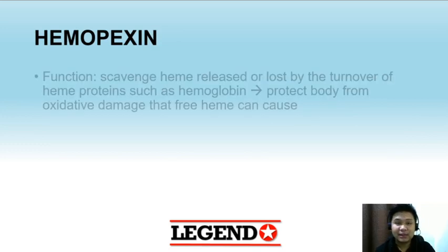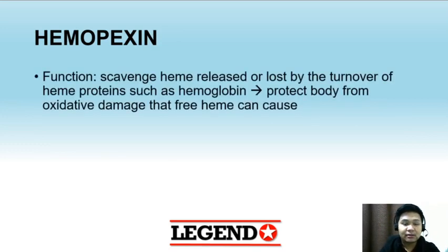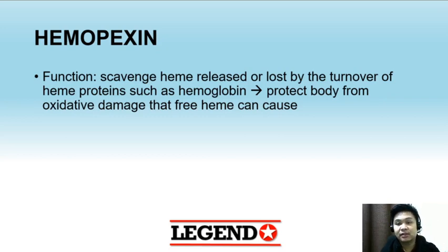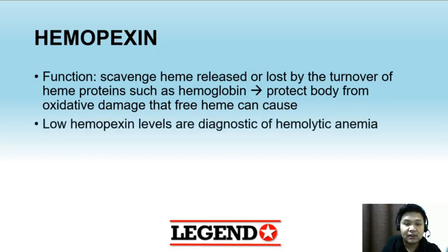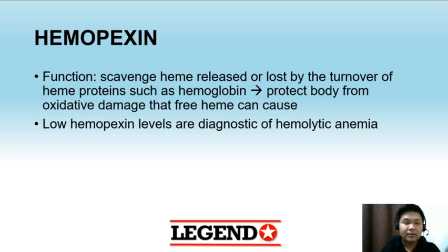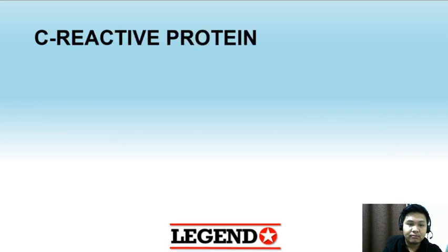Another protein is hemopexin. Hemopexin scavenges heme released by the turnover of heme proteins such as hemoglobin and protects the body from the oxidative damage that free heme can cause. Low hemopexin levels are diagnostic of hemolytic anemia. Both haptoglobin and hemopexin are decreased in hemolytic anemia.